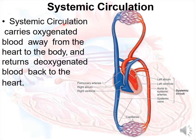In systemic circulation, oxygenated blood is carried away from the heart to the different parts of the body, and deoxygenated blood is returned to the heart. In contrast, in pulmonary circulation, deoxygenated blood is carried from the heart to the lungs, and oxygenated blood is carried back to the heart. Here in systemic circulation, oxygenated blood is carried away from the heart, and deoxygenated blood is returned to the heart.